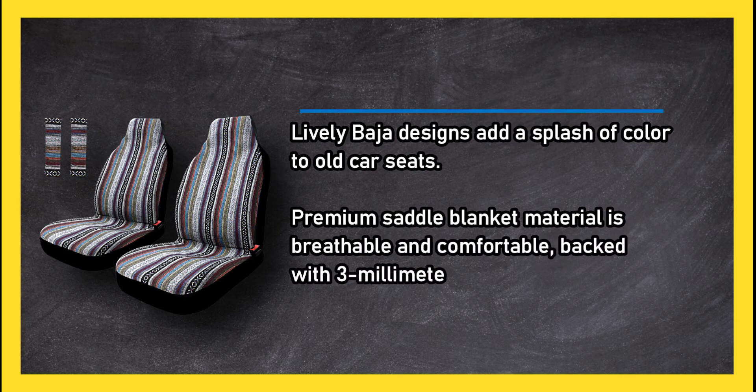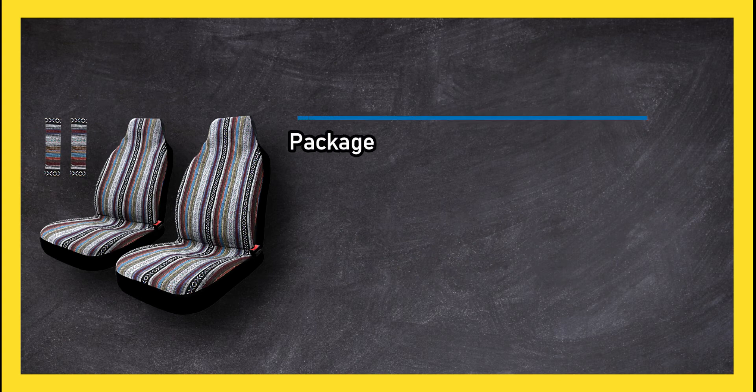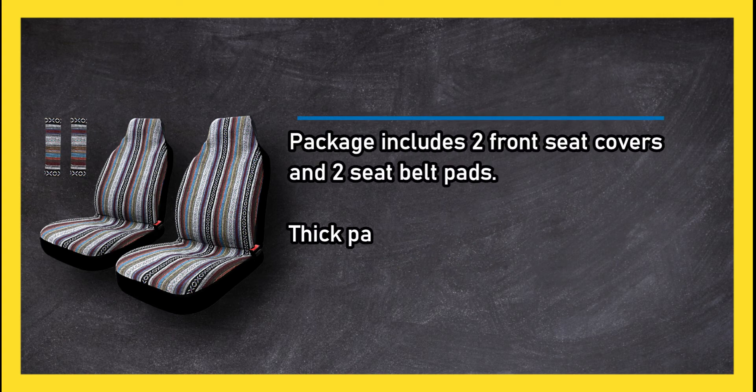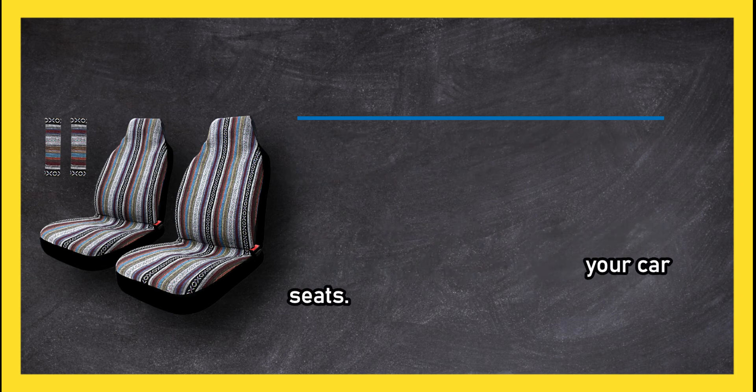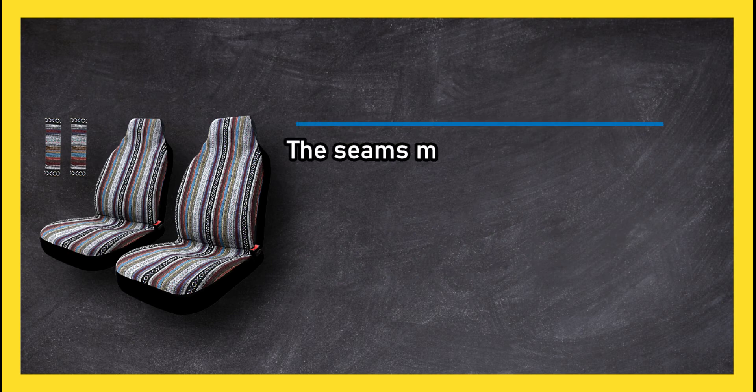Backed with three-millimeter foam padding, the package includes two front seat covers and two seatbelt pads. Thick padding and unique Baja motifs both protect and personalize your car seats. The seams may rip over time, and they don't fit all car seats.